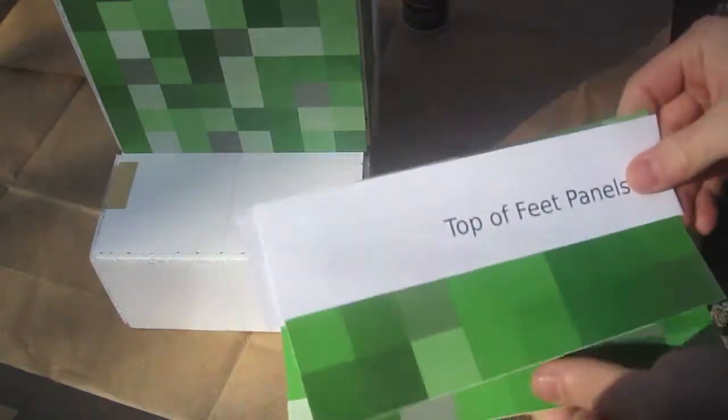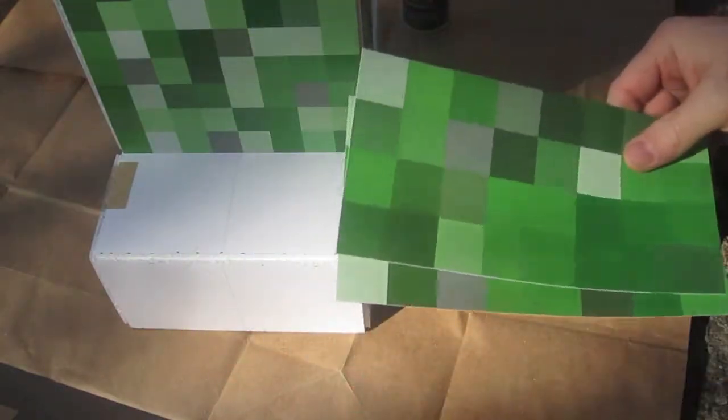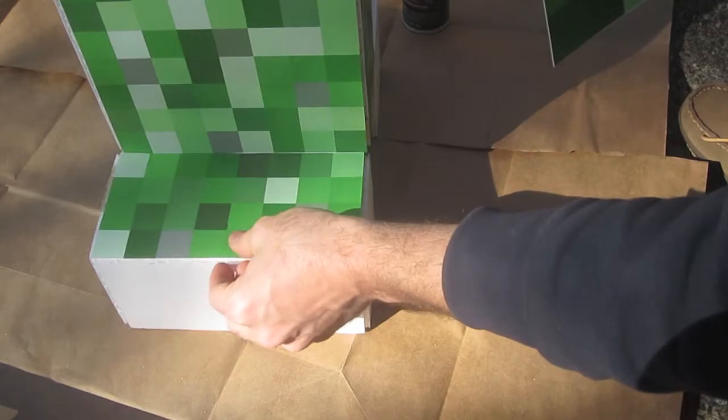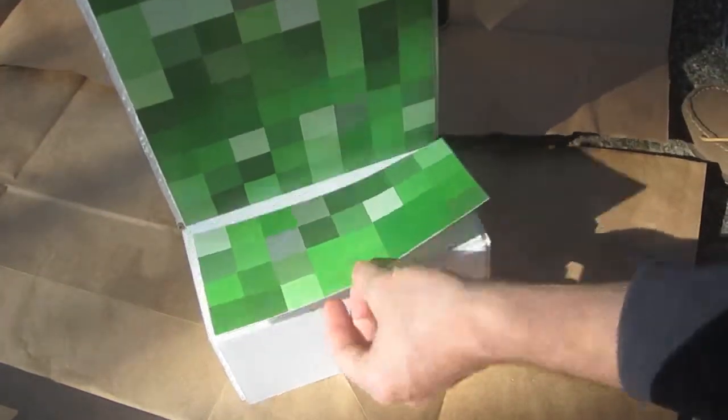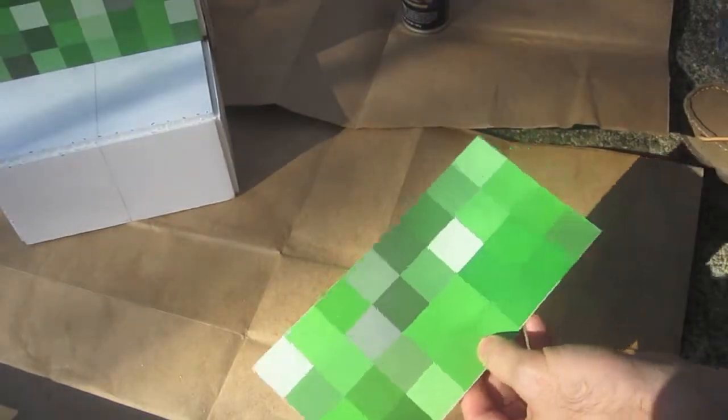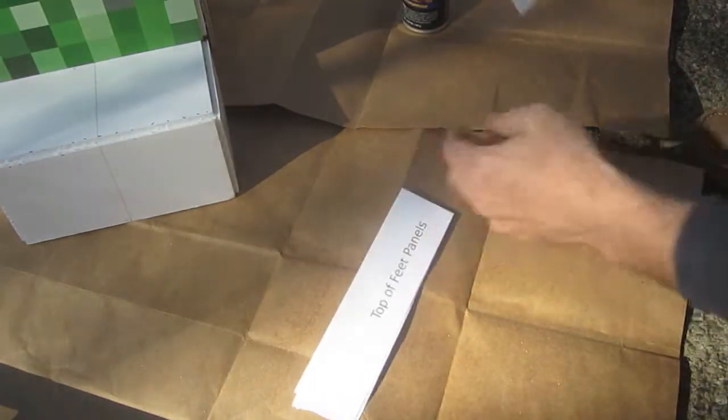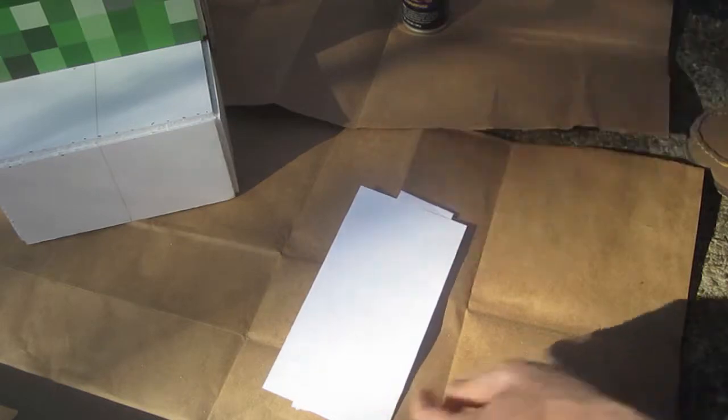So let's do the top of feet panels. We've got two of those. Again, it doesn't matter which one goes on which side. But this one is going to go right here and the other one is going to go right here. So let's go ahead and get this first one done. Some excess paper to help keep it off the sticky part.